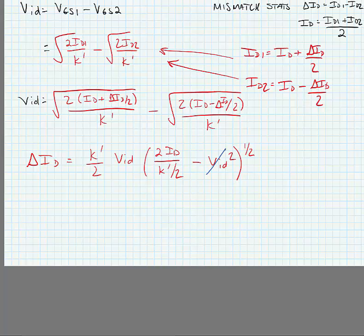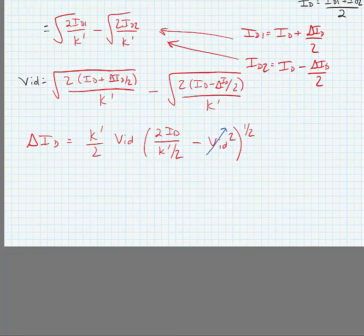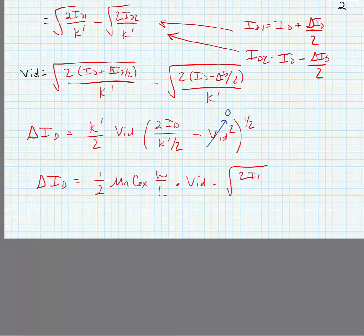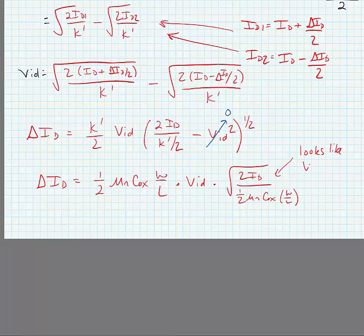If we assume relatively small differential voltage swings causing a small change in current, then the VID term goes to zero and we're left with an expression that looks very much like our overdrive voltage expression — not quite the same, but very similar. What this is saying is that our change in current is going to be dependent essentially upon the overdrive voltage.